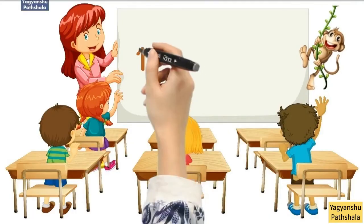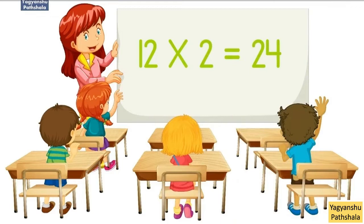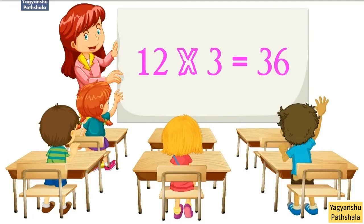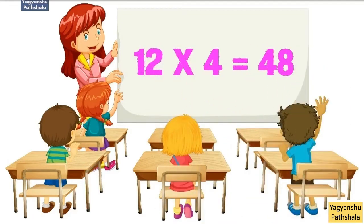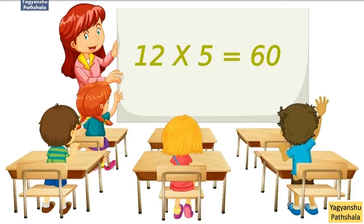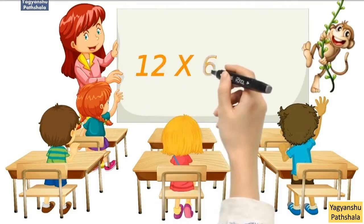12 times 1 equals 12. 12 times 2 equals 24. 12 times 3 equals 36. 12 times 4 equals 48. 12 times 5 equals 60. 12 times 6 equals 72.